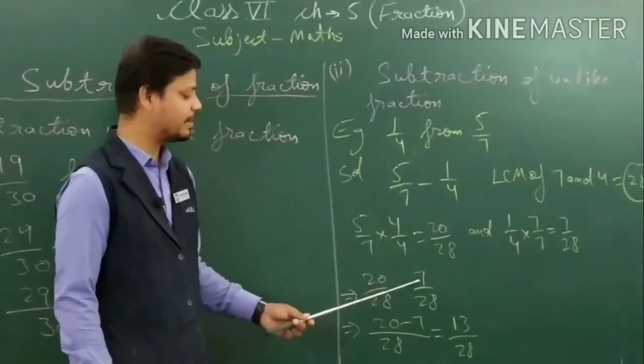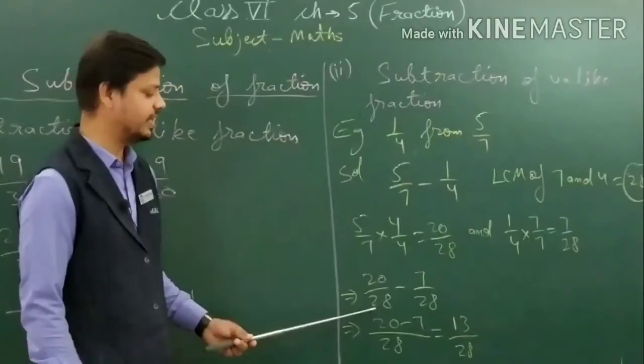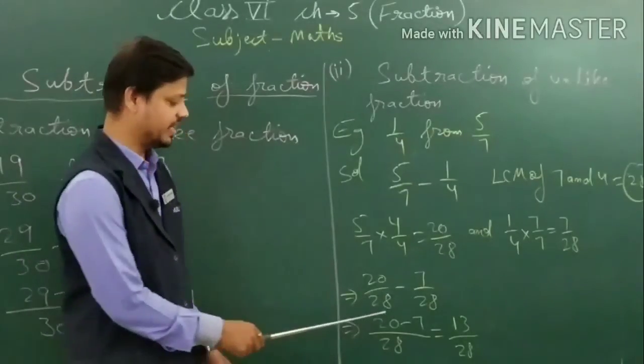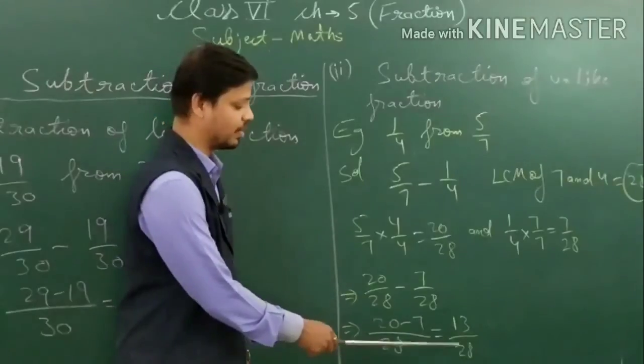So you subtract 7 upon 28 from 20 upon 28. This is a like fraction and we subtract like fractions directly. That is 20 minus 7, which equals 13 upon 28.